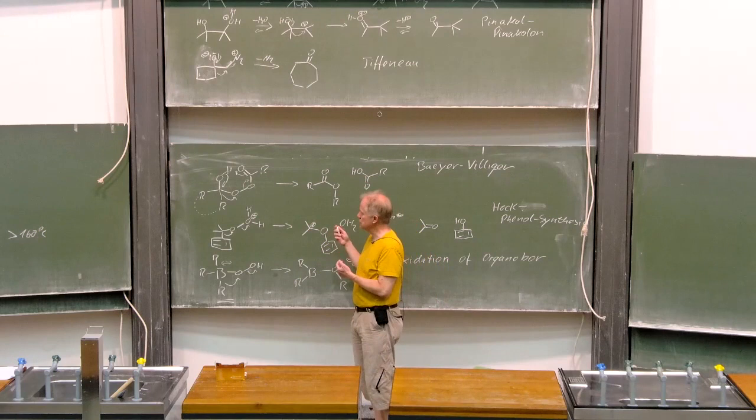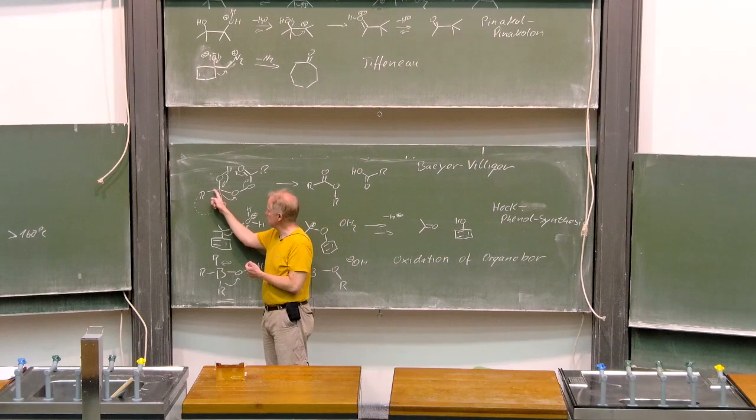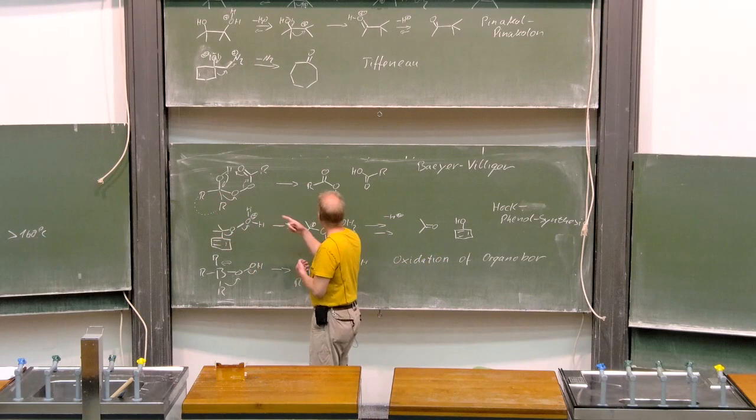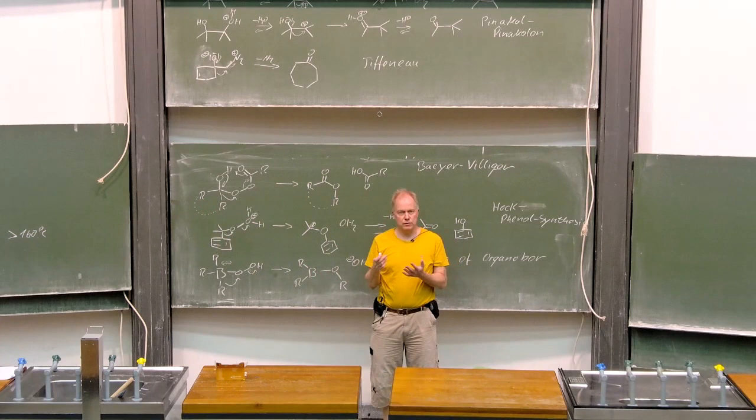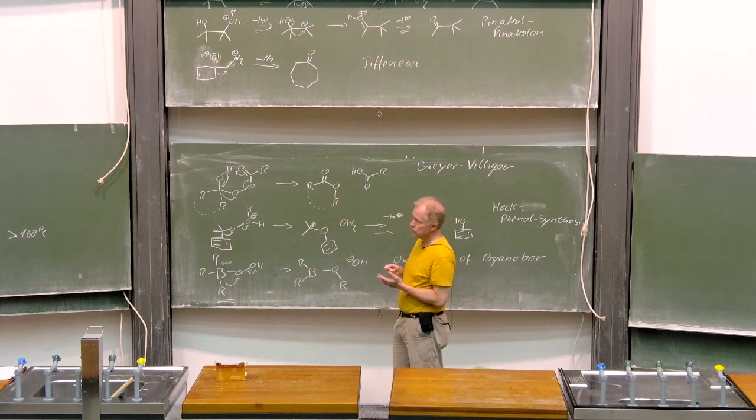Imagine having, for instance, a cyclohexane moiety here, a six-membered ring. Then, you would end up with a seven-membered ring here, with an oxygen included, which reminds us, of course, of the Tiffeneau reaction we have discussed before.